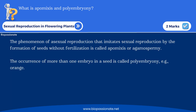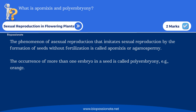Now let's understand very important questions chapter-wise. Chapter one: Sexual Reproduction in Flowering Plants. Let's start with a very simple question — what is apomixis and polyembryony? It's a definition-based question; you will get two marks if you write the right definition.